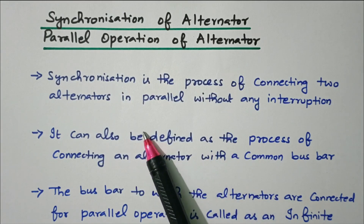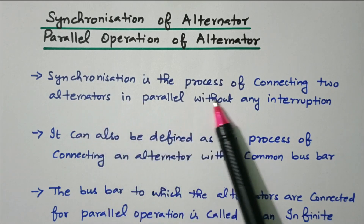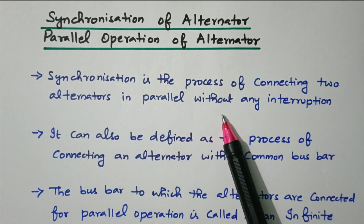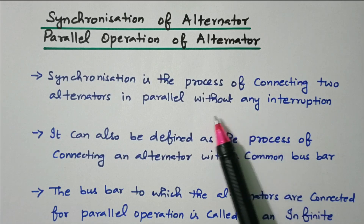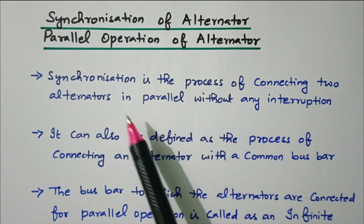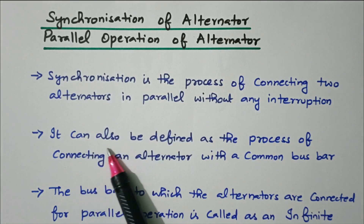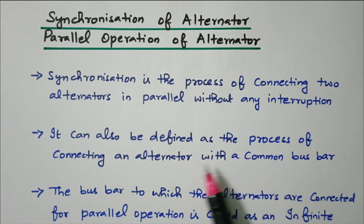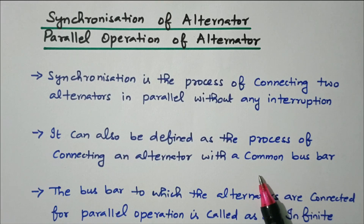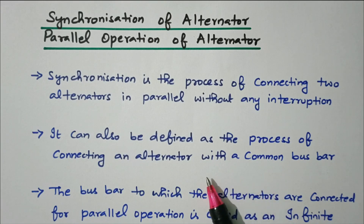Synchronization is the process of connecting two alternators in parallel without any interruption. We need to connect the two alternators to the bus bar — that is called synchronization. It can also be defined as the process of connecting an alternator with a common bus bar. There are n number of alternators available; connecting them to the common bus bar is called synchronization.